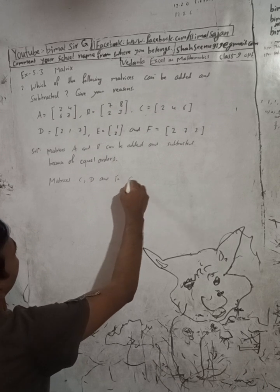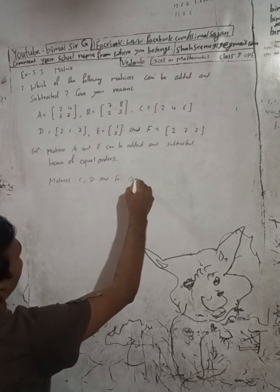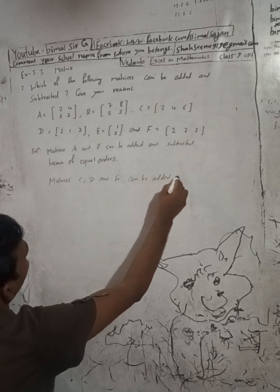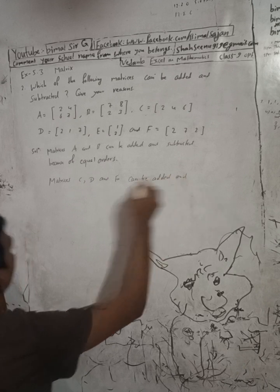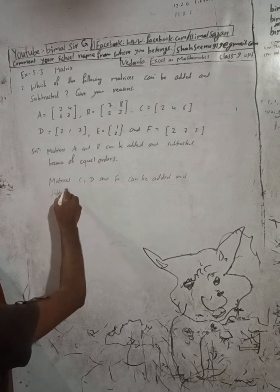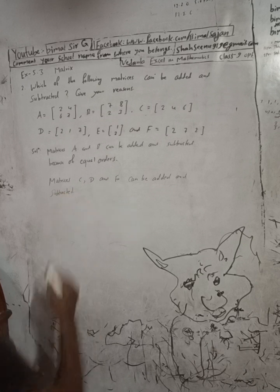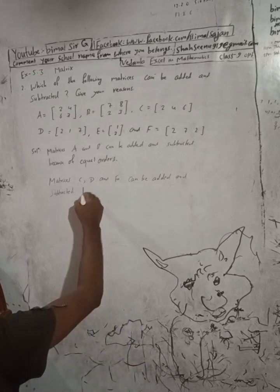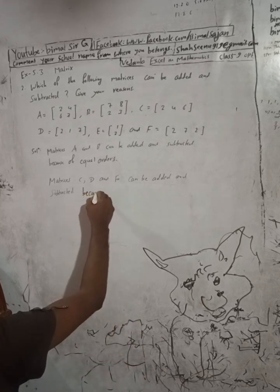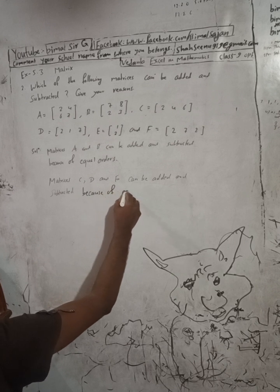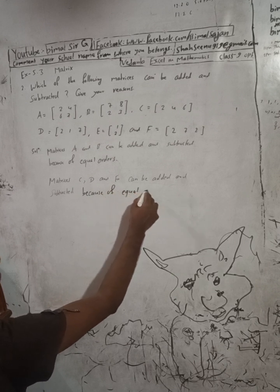Matrices C, D, and F can be added and subtracted because of equal orders. They share the same order, which is why addition and subtraction is possible among them.